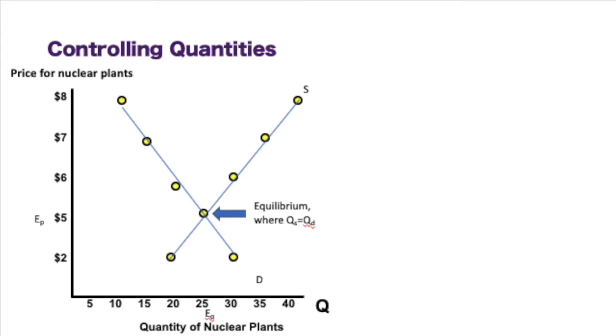We see an equilibrium point where our quantity supplied equals our quantity demanded. And so at 5, we'll say this is in millions. Our equilibrium price is 5 million, and our equilibrium quantity is 25.